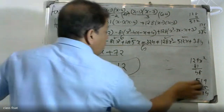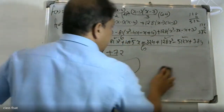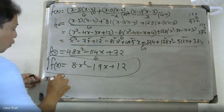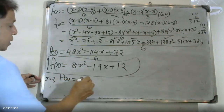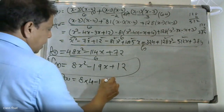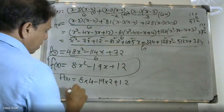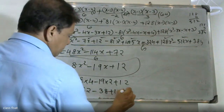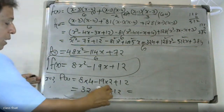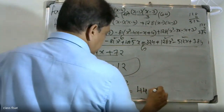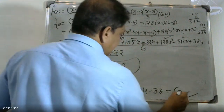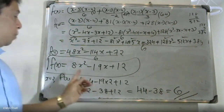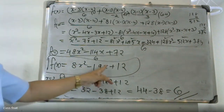Now substituting x=2 to find f(2): f(2) = 8(2²) - 19(2) + 10 = 8(4) - 38 + 10 = 32 - 28 + 10 = ... wait, that gives f(2) equals 6. So the final answer is f(2) = 8 and the polynomial is 8x² minus 19x plus 10.